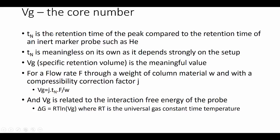So we need something else to give fundamental values to our experiments. And this is Vg, the specific retention volume. So Tn is the retention time of the peak compared to the retention time of the inert marker. It's meaningless on its own. Vg corrects for the flow rate of the gas through the column. And the column has a weight W of raw material. And there's a compressibility correction factor J which is well known. So you just calculate Vg from Tn, the flow rate and the weight and this correction factor.